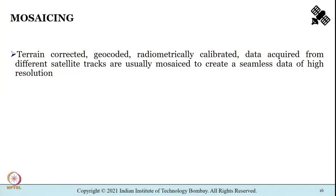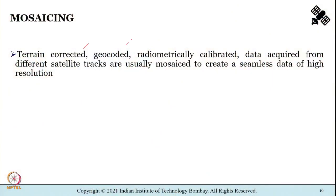The final term is mosaicing. When terrain-corrected, geocoded, and radiometrically calibrated data acquired from different satellite tracks need to be combined, mosaicing stitches the different satellite images together — ensuring overlap between areas — to create a seamless, high-resolution dataset.